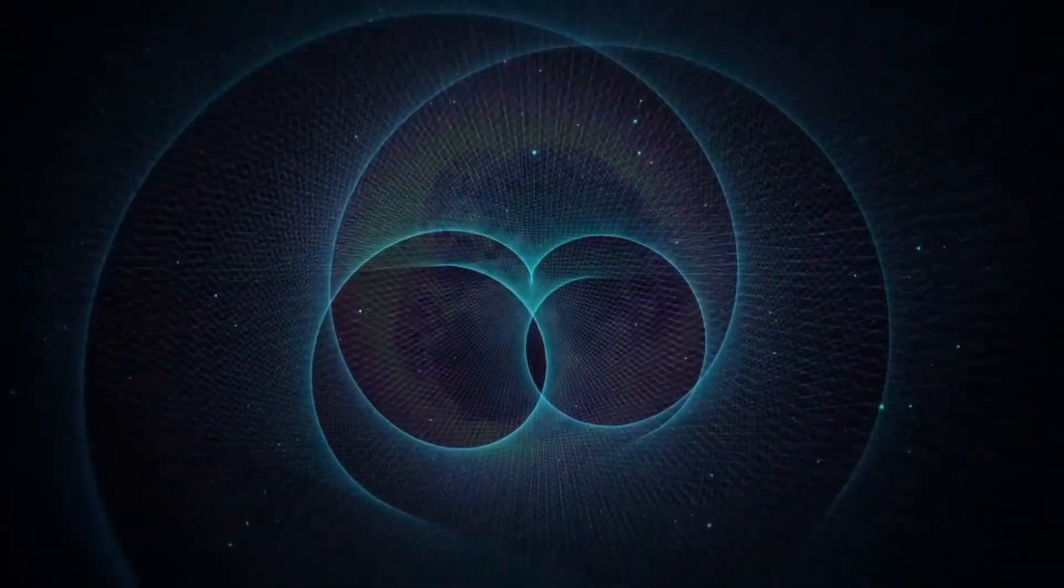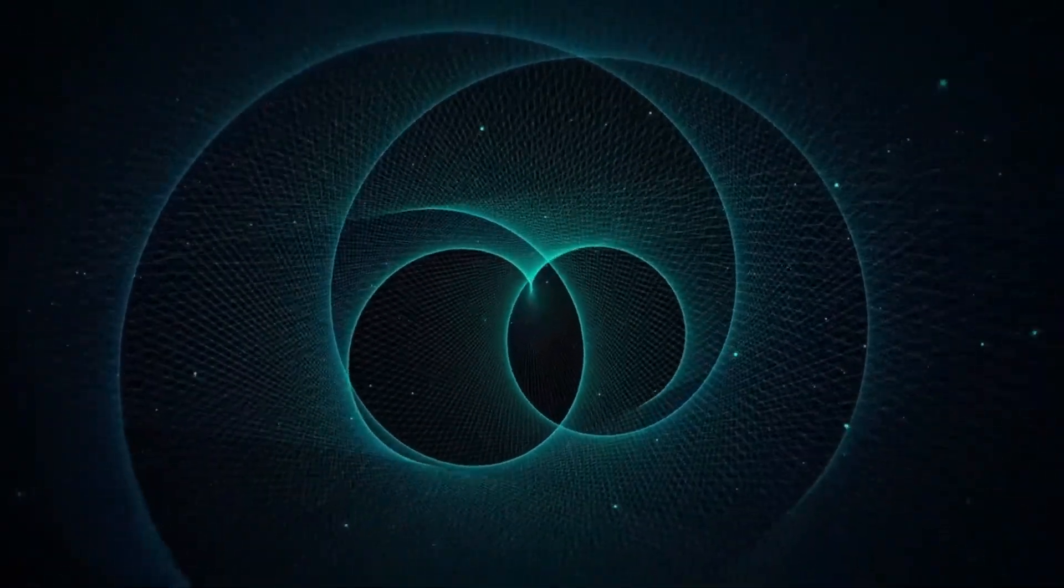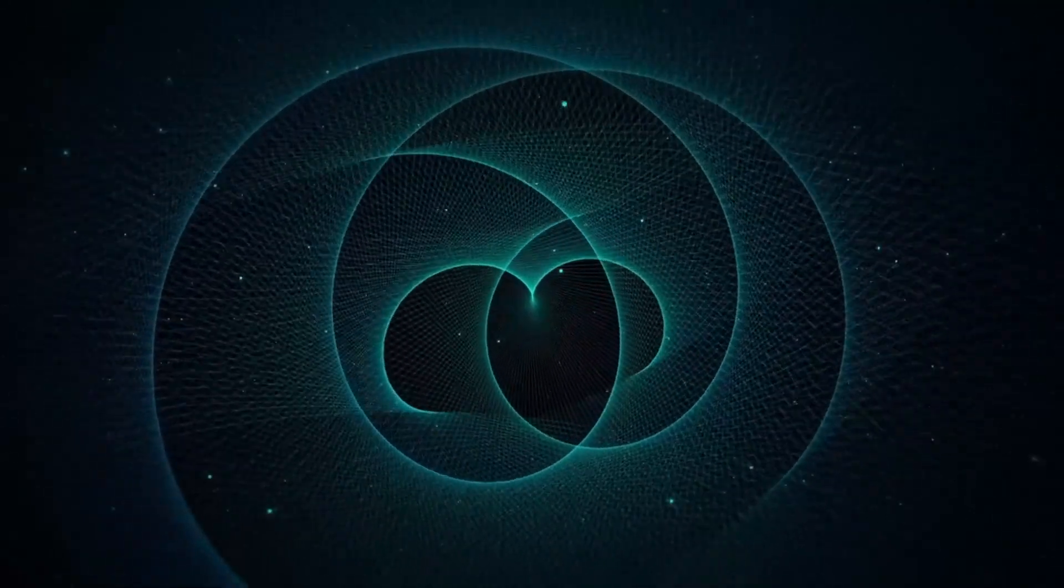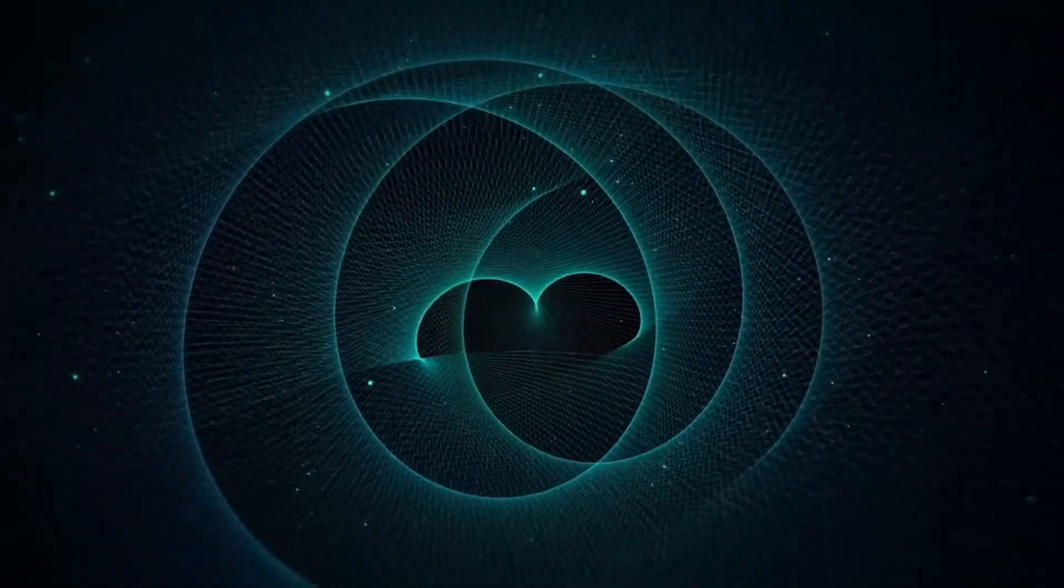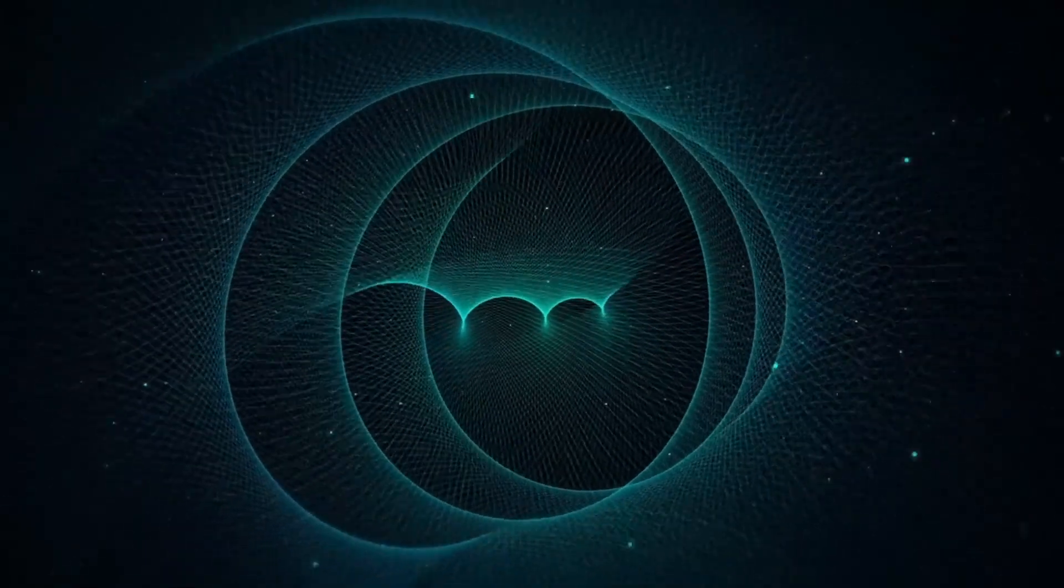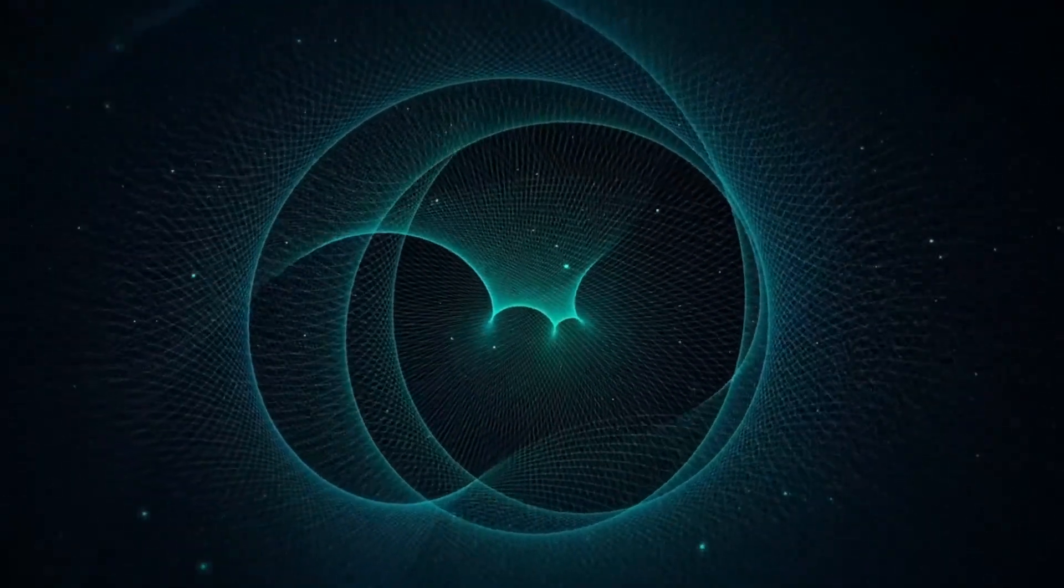When this phase change took place, it did not happen all at once throughout the cosmos, but rather separately in numerous different regions of spacetime, and topological defects or wrinkles emerged at the boundaries of these regions.